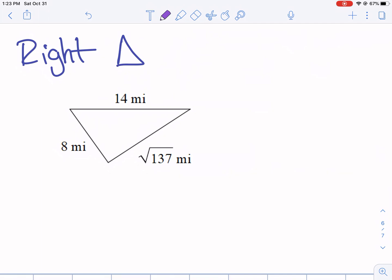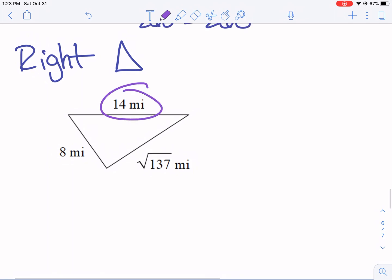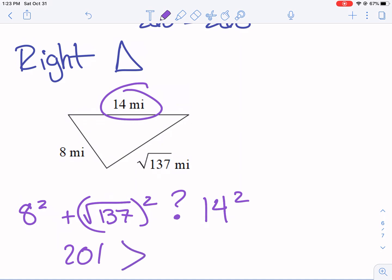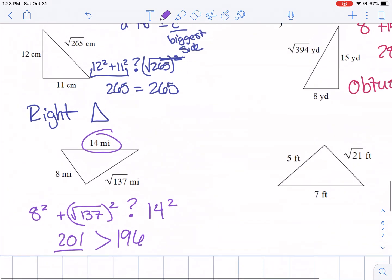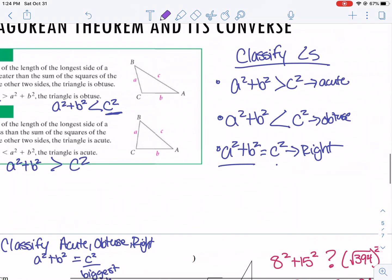So now we're going to do here, let me type in the square root of 137. That's smaller, so 14 is my bigger side. So 8 squared plus the square root of 137 squared. And we're checking to see how is it related to 14 squared. So we have 201 is bigger than 14 squared, which is 196. It is bigger than. So if the two little legs are bigger than that c squared, it is acute.